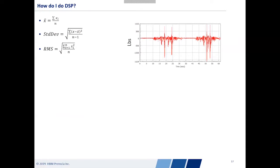How do I actually do this? If I have a raw signal, the mean is just the average — the sum of every data point divided by the number of data points. But what about something more complicated like standard deviation or RMS? These are well-established equations, but how do I plug this data into these equations to get those values? I have to choose some sort of tool to do that with.